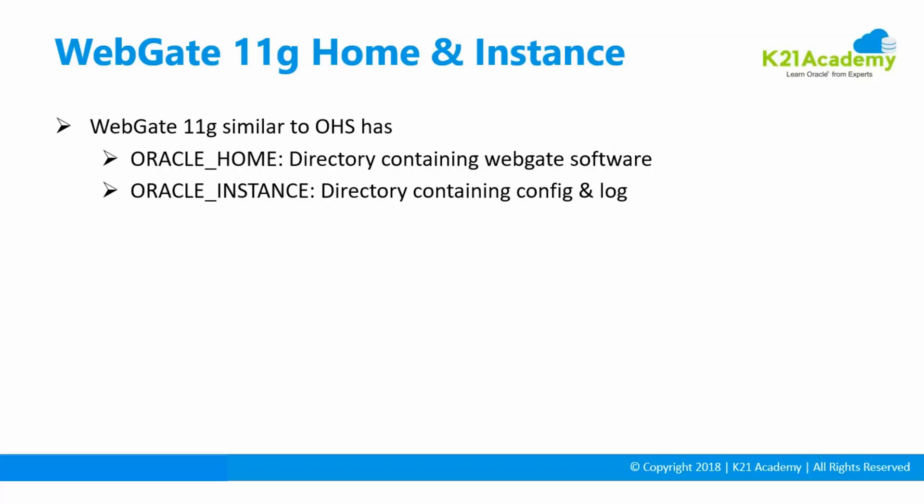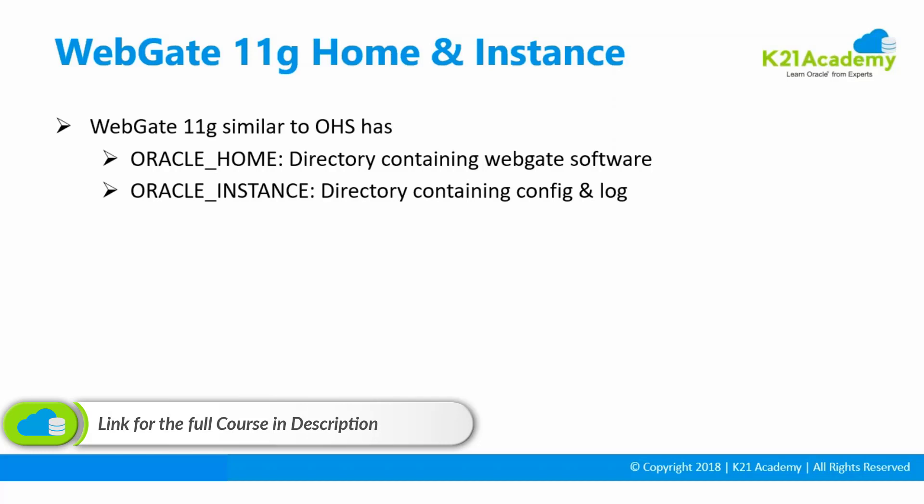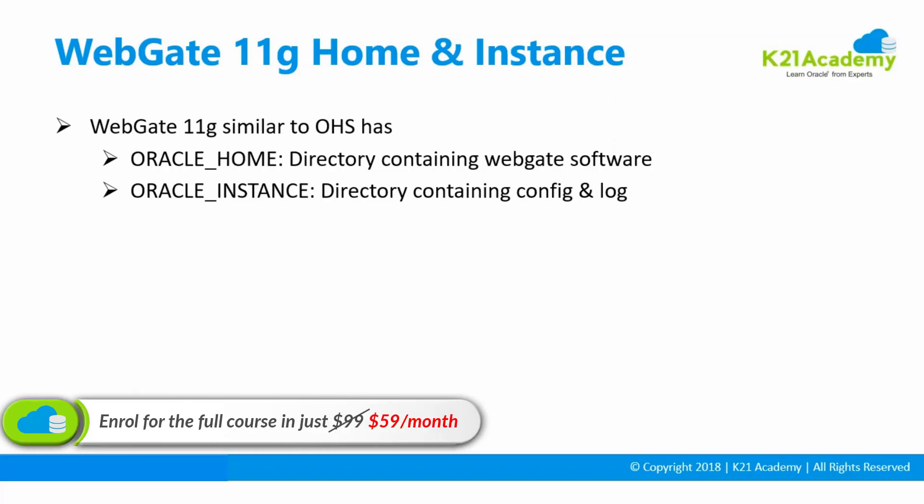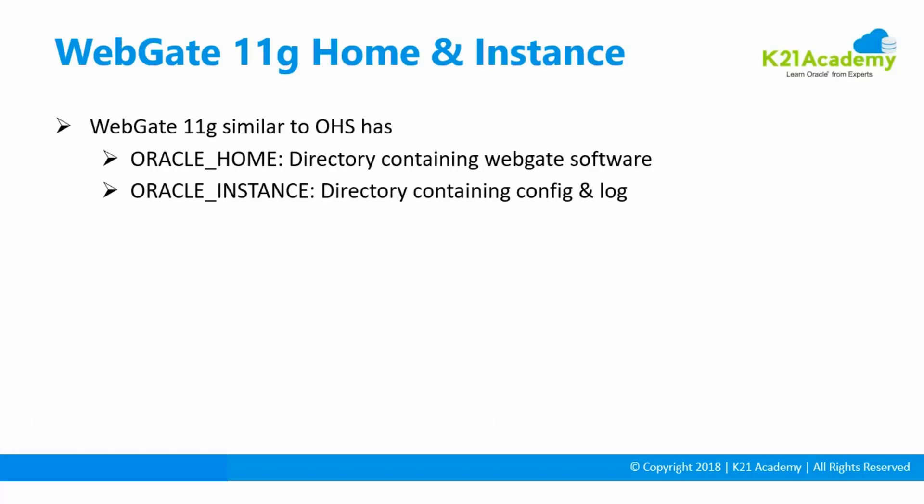Once Oracle Home is installed and WebGate is installed, when you configure the WebGate it's going to create an instance directory specific to the WebGate. Earlier in the Oracle HTTP Server module, we saw how the instance gets created for HTTP Server. Similarly, we are going to create an instance of WebGate, and in that instance you will have all the configuration files related to the WebGate.